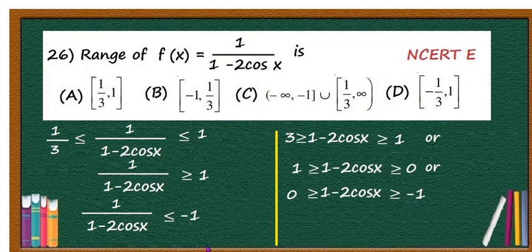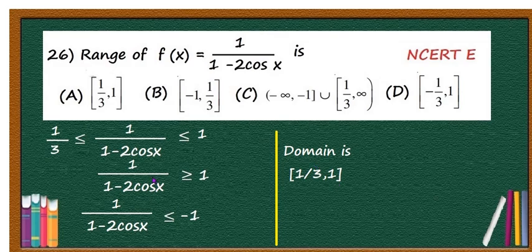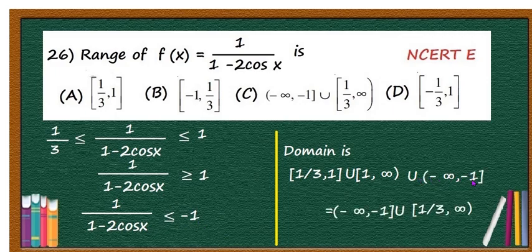If you write this in terms of intervals, the function lies between 1/3 and 1, or the function may be ≥ 1, that is, it lies in [1, ∞), or the function may be ≤ -1, that means it lies in (-∞, -1]. Taking all these together, you can write (-∞, -1] ∪ [1/3, ∞). Therefore, the correct answer is option C.